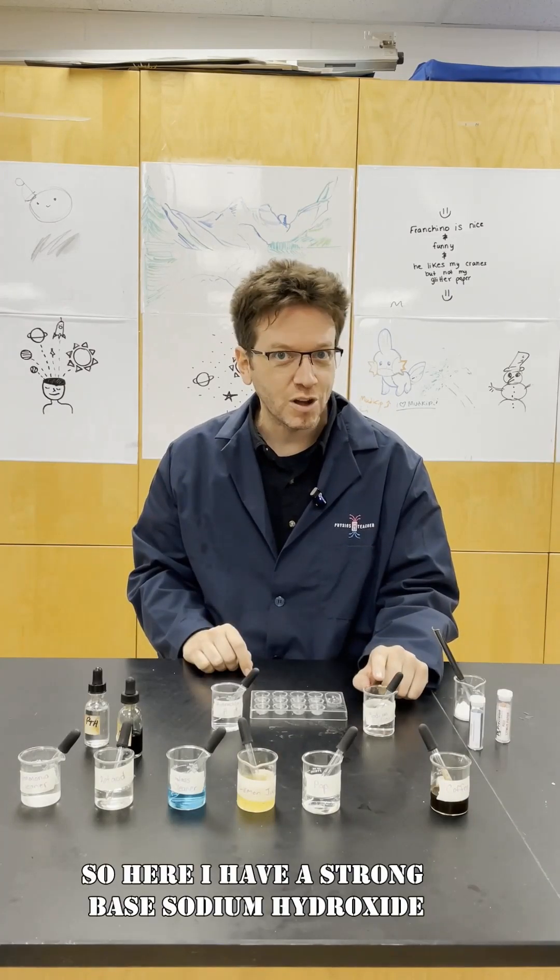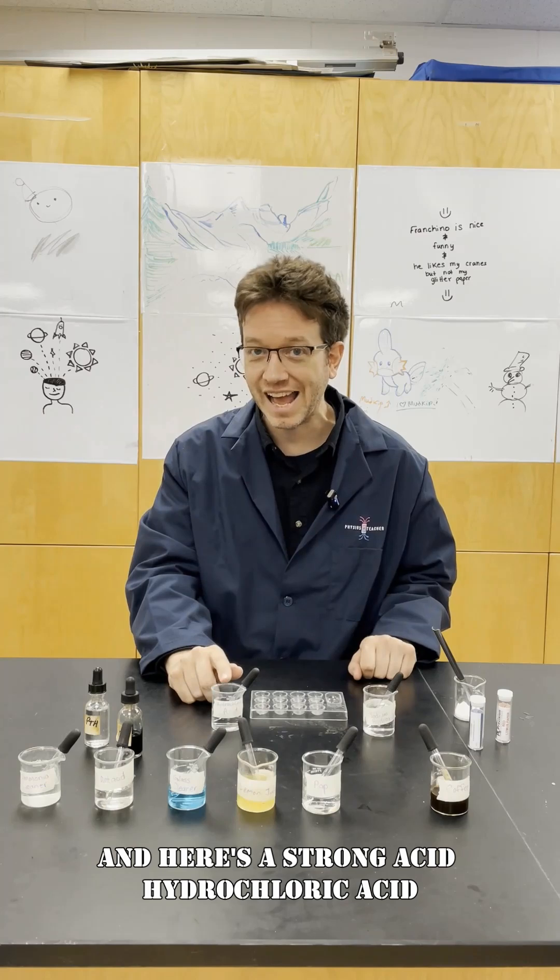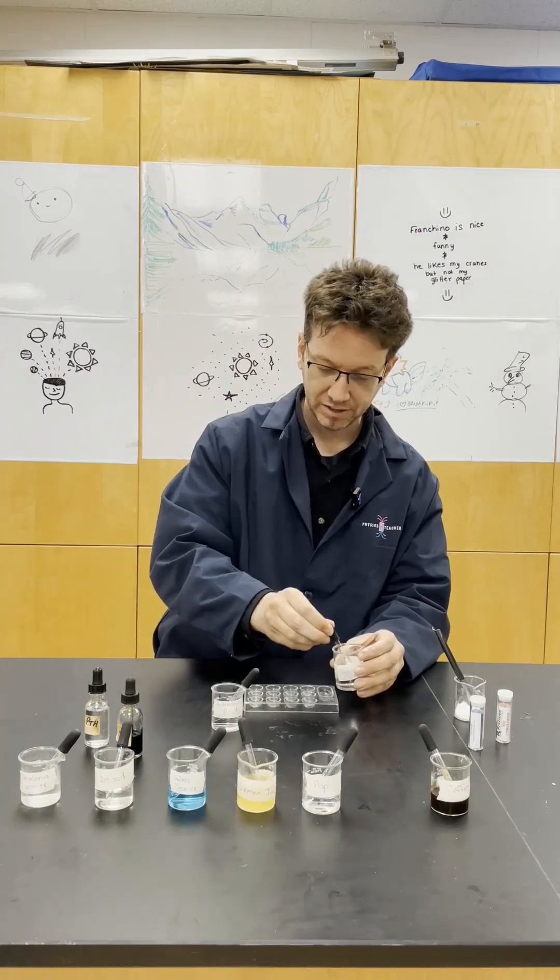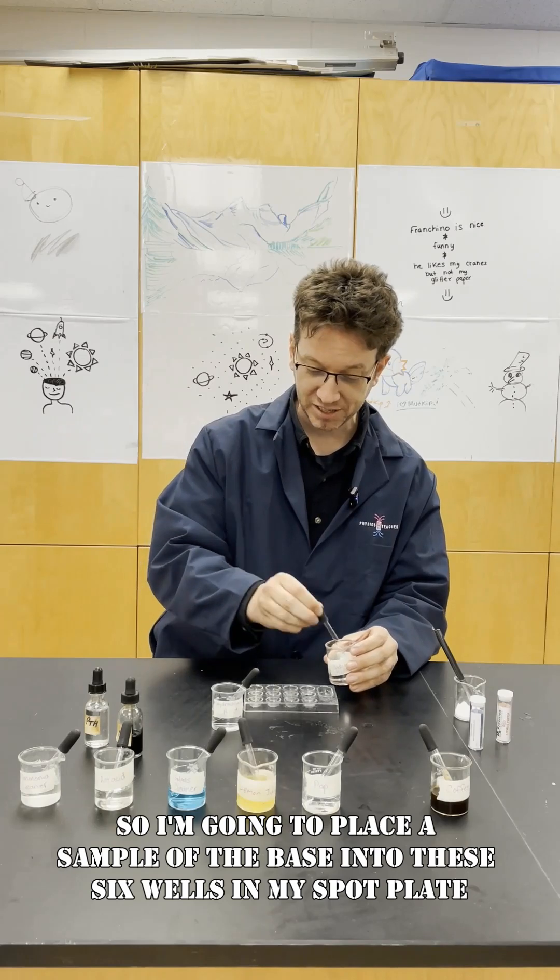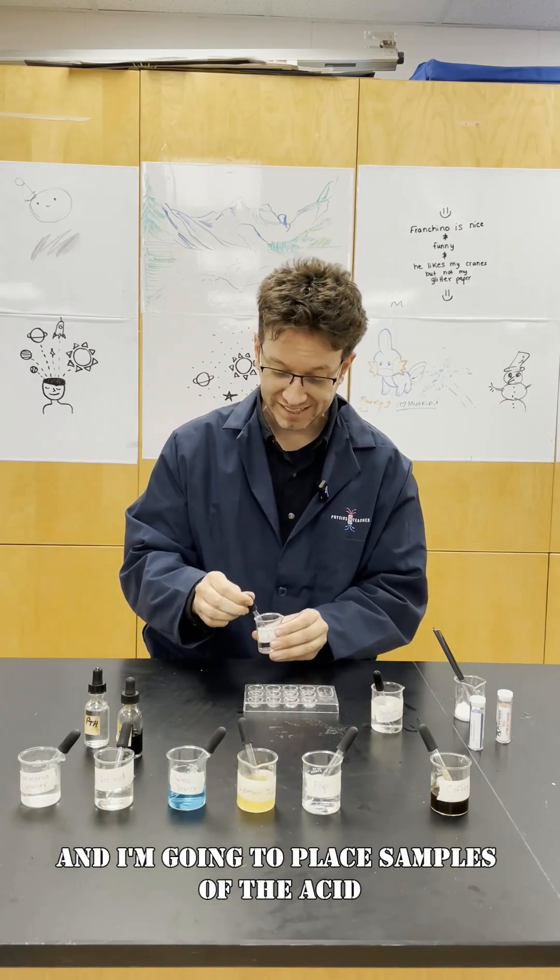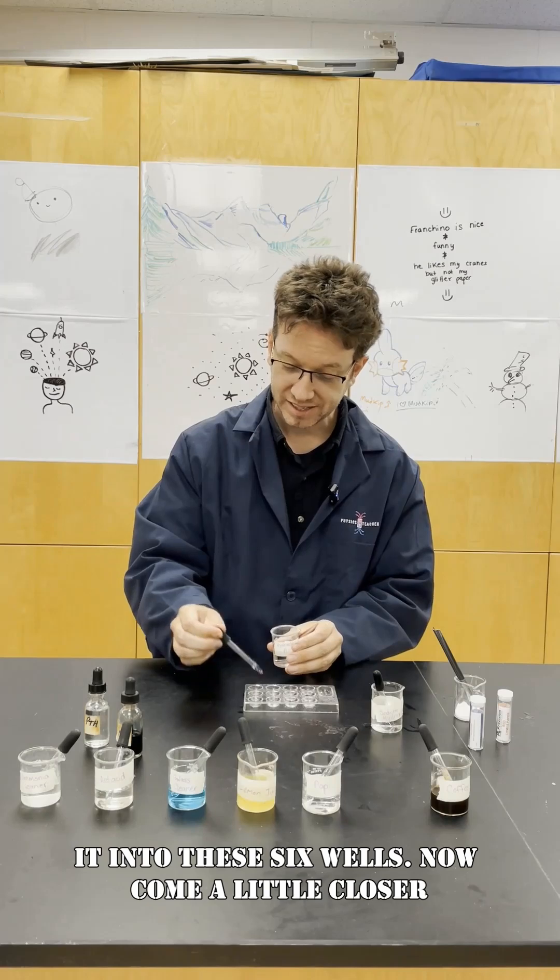So here I have a strong base, sodium hydroxide, and here's a strong acid, hydrochloric acid. So I'm going to place a sample of the base into these six wells in my spot plate, and I'm going to place samples of the acids into these six wells.